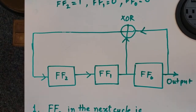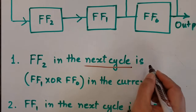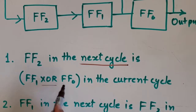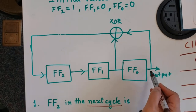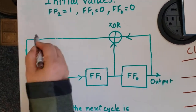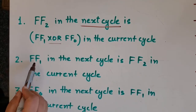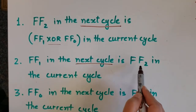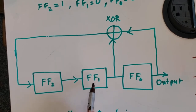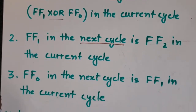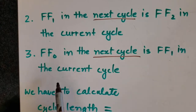In this configuration, FF2 in the next cycle is FF1 XOR FF0 — the output of FF1 XOR'd with the output of FF0 becomes FF2 in the next cycle. The second rule is FF1 in the next cycle is FF2 in the current cycle. Similarly, FF0 in the next cycle is FF1 in the current cycle.